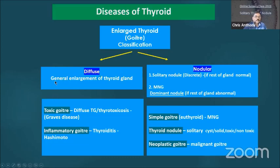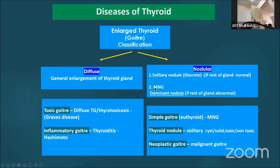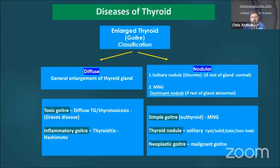If it's diffuse, then it can be a general enlargement of the thyroid, such as toxic goiter and inflammatory goiter. Today we are interested in the nodular goiter, which can be either a solitary nodule or a discrete nodule where the rest of the gland is normal, or it can be a multinodular goiter, which is also very common, where the nodule you are feeling or seeing is a dominant nodule of a multinodular goiter.